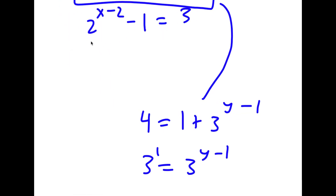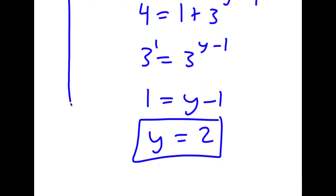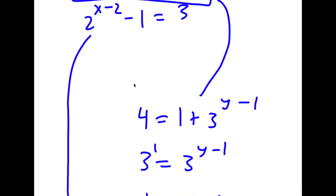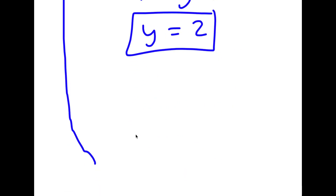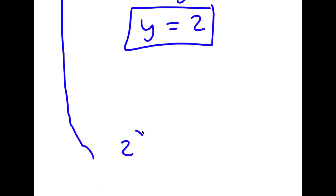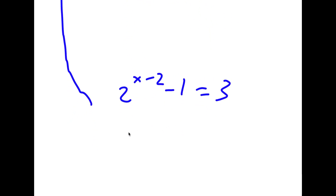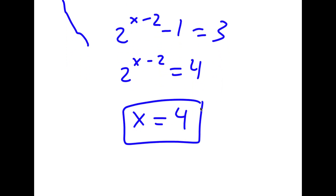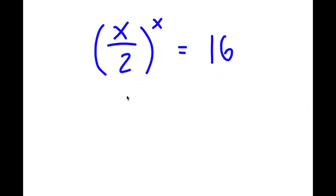For my second equation, 2^(x-2) minus 1 equals 3, meaning 2^(x-2) equals 4, which is 2 squared, so x minus 2 equals 2 and x equals 4. Therefore x equals 4 and y equals 2.